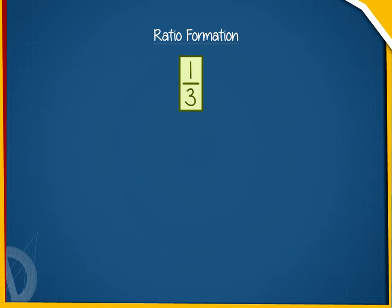For example, when we write 1 by 3, it means we are comparing 1 and 3 by division. In form of ratio, we write 1 by 3 as the ratio of 1 is to 3 and read as ratio of 1 to 3.